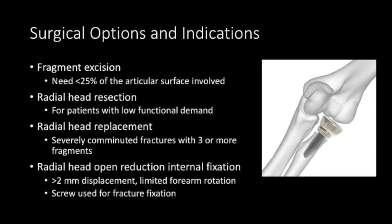Surgical options and indications include fragment excision when the piece is less than 25% of the surface. Radial head resection is used when the radial head is in multiple fragments and is appropriate for a patient with low functional demand. A radial head replacement is used for severely comminuted fractures in 3 or 4 fragments. Open reduction internal fixation is appropriate when there is greater than 2mm of displacement and limited forearm rotation, using one or two screws for fracture fixation.